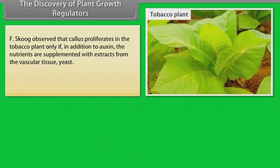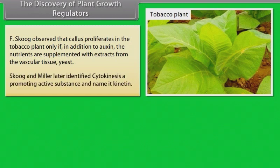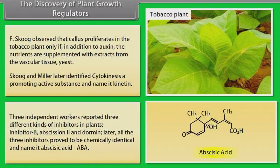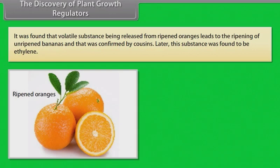The discovery of plant growth regulators. F. Skoog observed that callus proliferates in the tobacco plant only if, in addition to auxin, the nutrients are supplemented with extracts from the vascular tissue or yeast. Skoog and Miller later identified a cytokinesis-promoting active substance and named it kinetin. Three independent workers reported three different kinds of inhibitors in plants: inhibitor B, abscission 2, and dormin. Later, all the three inhibitors proved to be chemically identical and named it abscisic acid, ABA. It was found that volatile substance being released from ripened oranges leads to the ripening of unripened bananas, and that was confirmed by Cousins. Later, this substance was found to be ethylene.